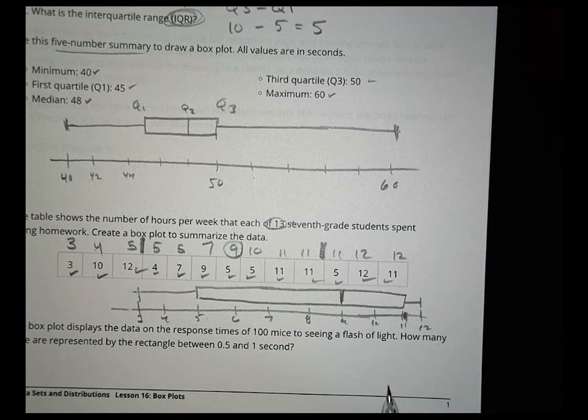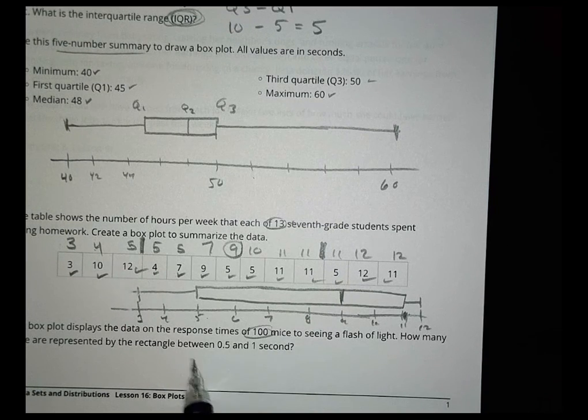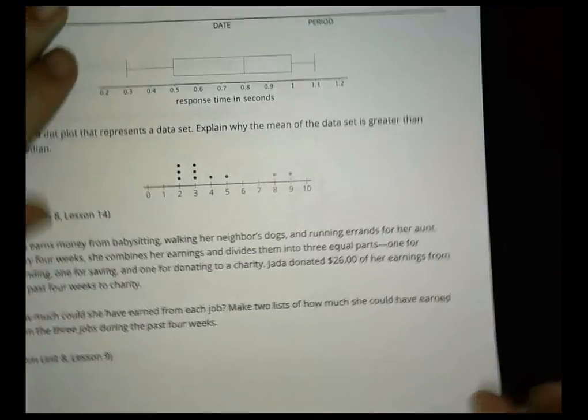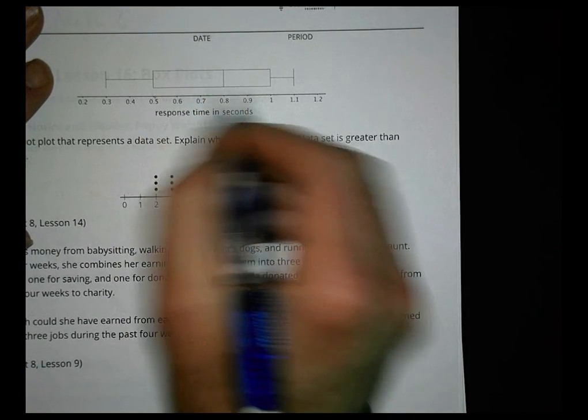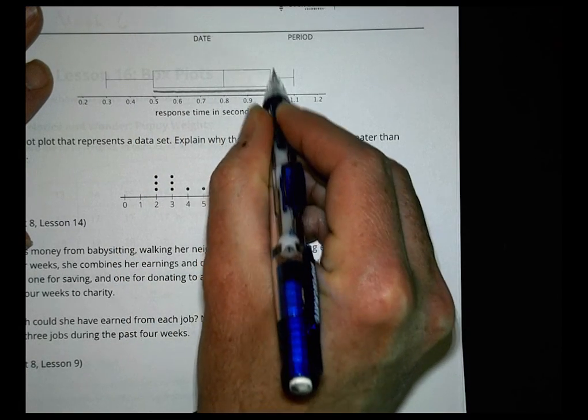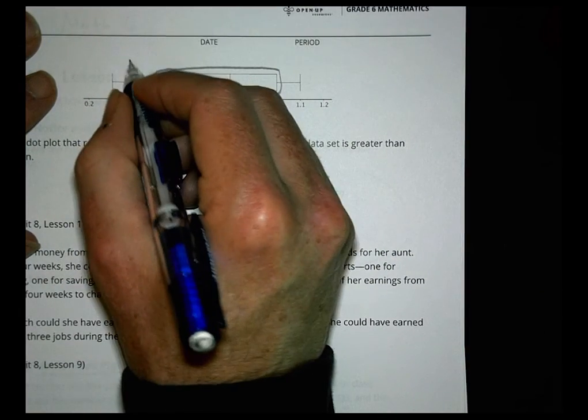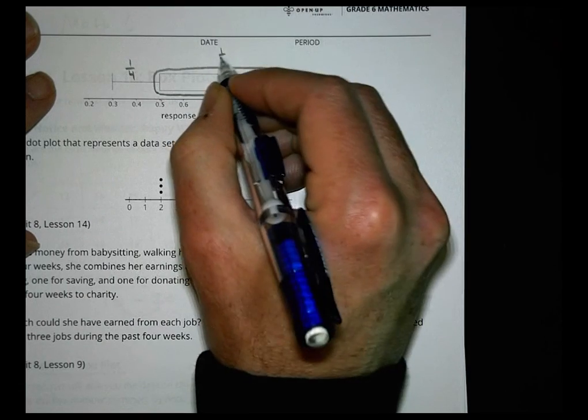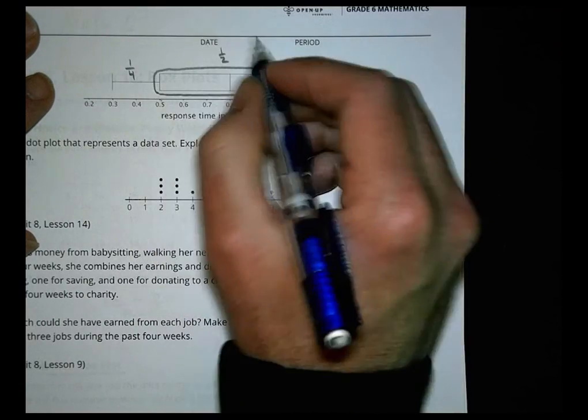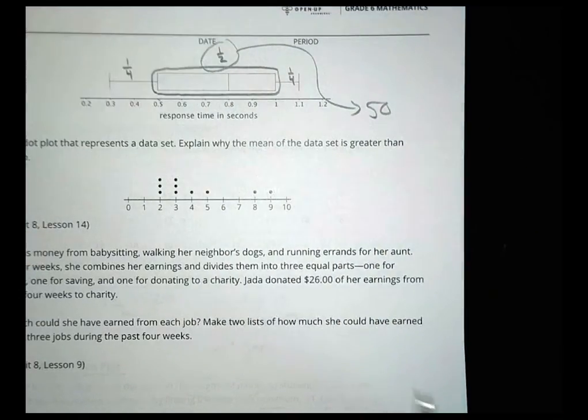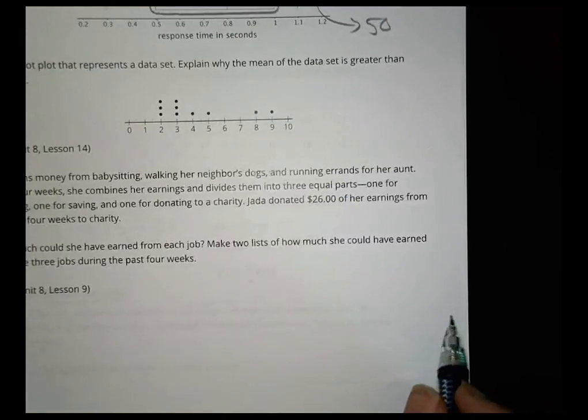The next question says the box plot displays the data on response times of a hundred mice. How many mice are represented by the rectangle from point five to one second? So point five to one is from here to here. Remember how quartile works again? This is a fourth, this is a half, and this is a fourth. And if there were a hundred mice, what is half of a hundred? We would say fifty mice.